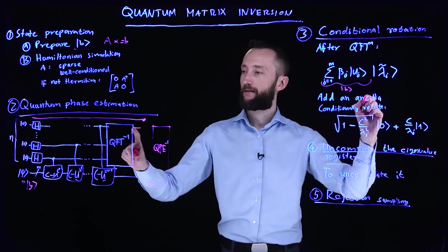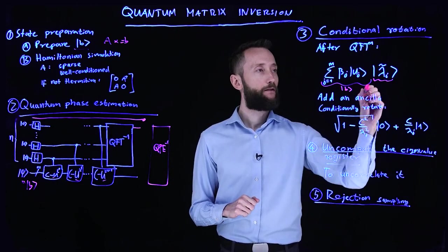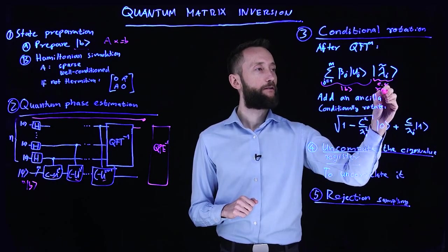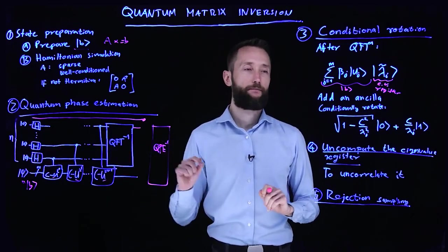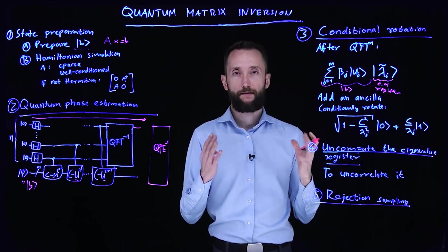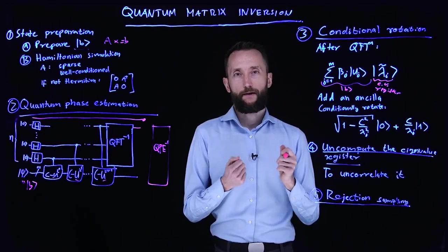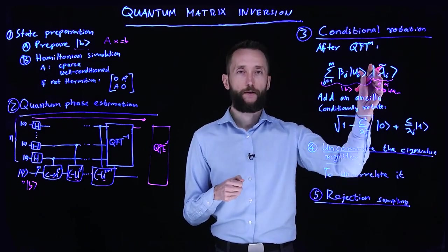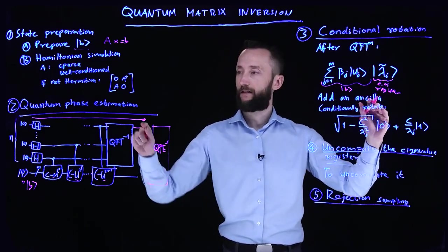And now in this eigenvalue register, we have an estimate of the eigenvalue. So this would be the eigenvalue register to some finite n precision that we decide how many qubits we want to use to represent this estimated phase. Once we have this state, we can apply some bit operations to actually get the inverse of this. And once we have that, we add this ancilla.